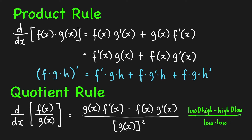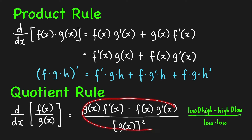So this is like high over low. The derivative of high over low is: low times derivative of high, minus high times derivative of low, over low low. Another way to remember the quotient rule is to think of your product rule in this preferred order.